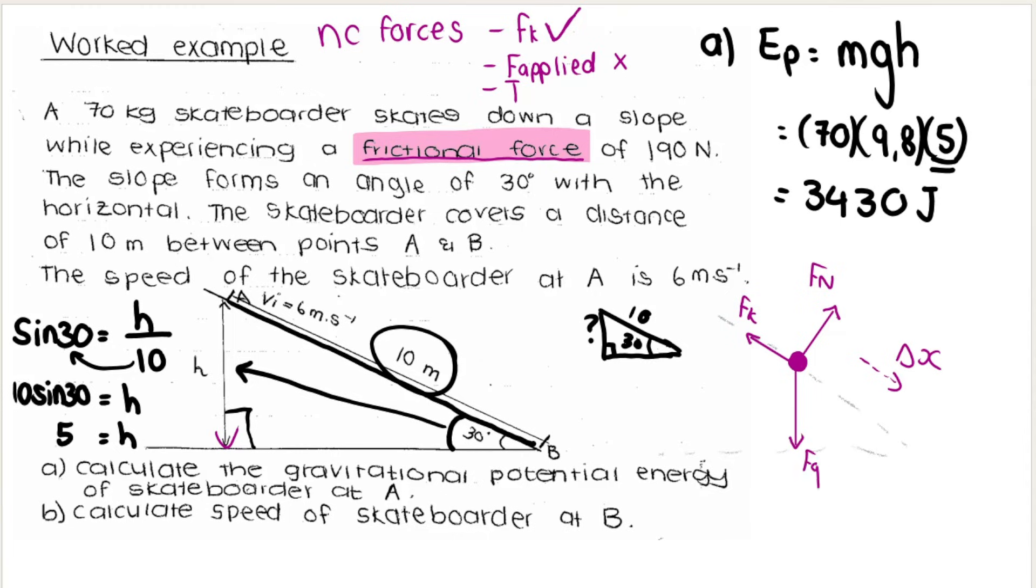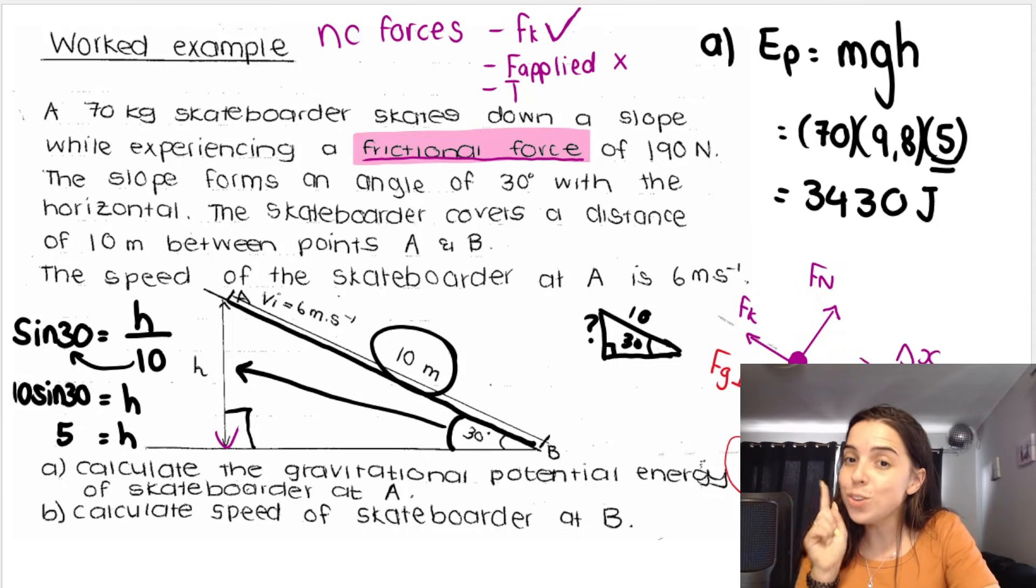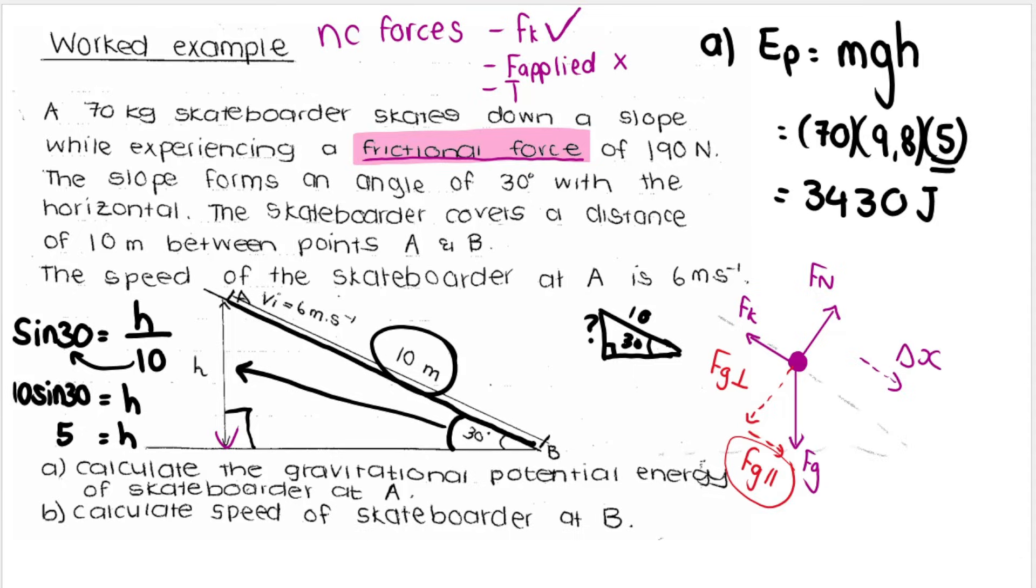There's gravity. And remember, I can break up that gravitational force into components. There's FG perpendicular. And this one over here, FG parallel. It is FG parallel. Well, this little force over here, the components of FG that is pulling the skateboarder down the slope. There's no applied force. Okay. So no applied force and no tension because it's not like the skateboard is connected to something else with a rope or something like that.